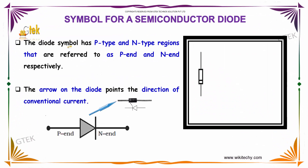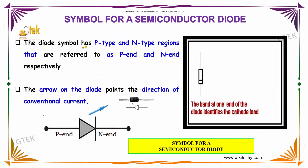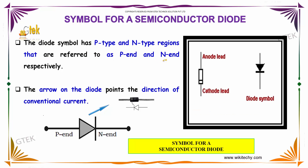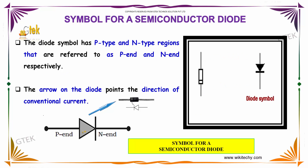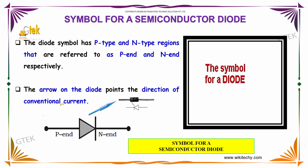The diode symbol has p-type and n-type regions referred to as anode and cathode respectively. The arrow of the diode points in the direction of the conventional current.